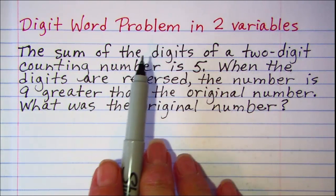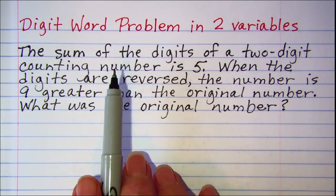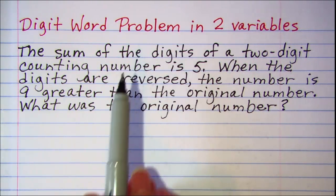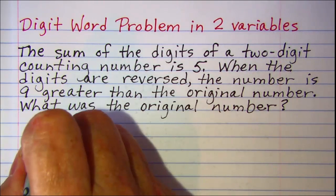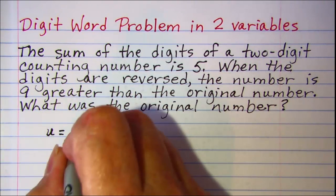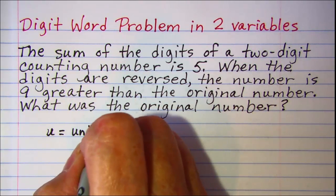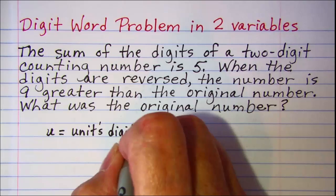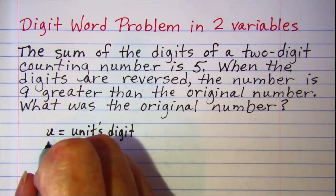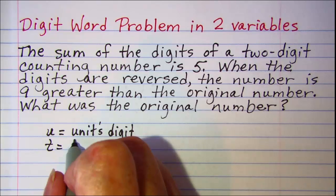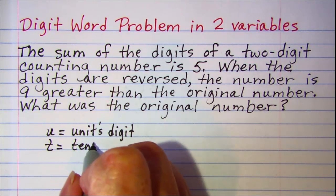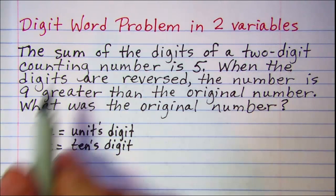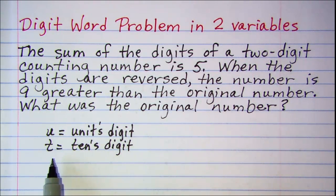Now, whenever you see that you have to solve a digit word problem, there are some variables that you need to use. The units digit, we let that be u. And then the tens digit, we let that be t. If we had a three-digit number, we would have a hundreds digit, which we would use h for that.